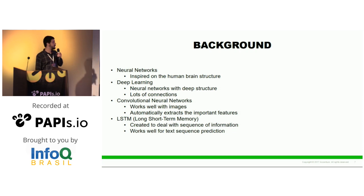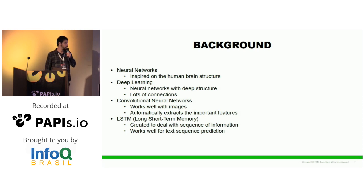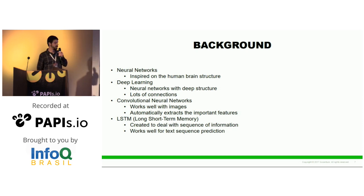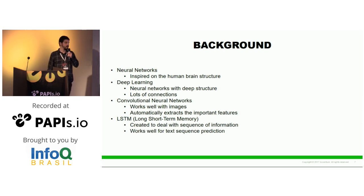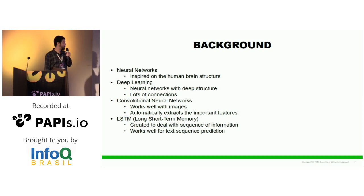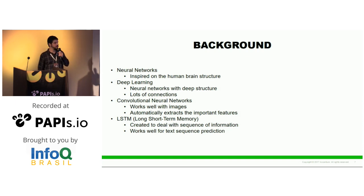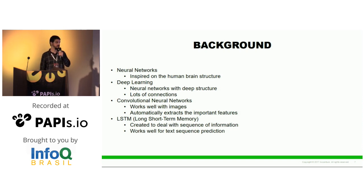Convolutional neural networks are specific deep learning architectures that work really well with images and automatically extract important features. They have the main concept of convolution, which essentially consists of filters that extract information from the data. The good thing is that it learns these filters from the data, so it does the job of extracting the right information to perform the task.